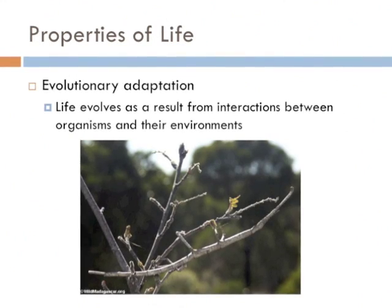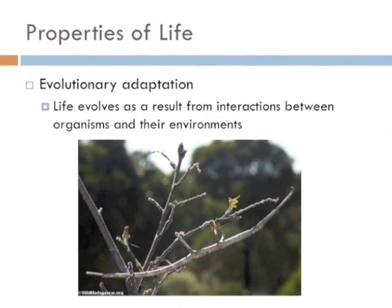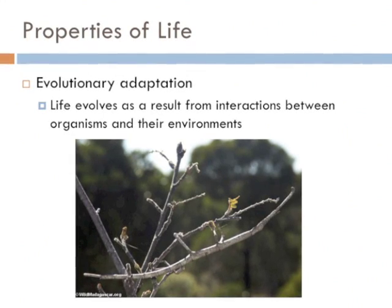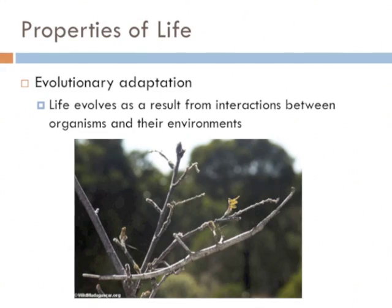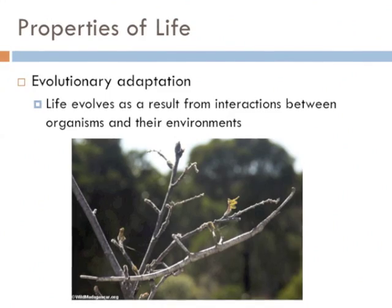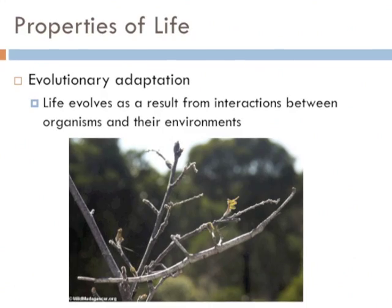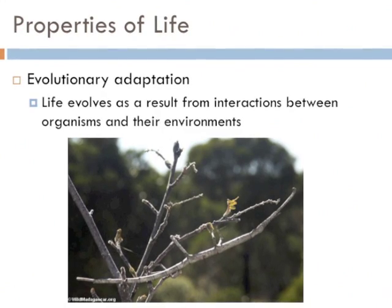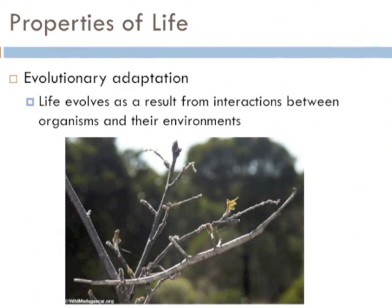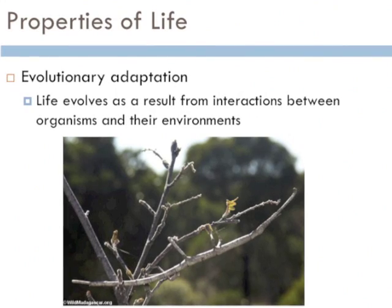Perhaps the final property of life is that it is evolutionarily adapted to its environment — life evolves as a result of interactions between organisms and their environment. In this picture, what do you see? You see a tree, a stick. There's actually a walking stick on there, which is an insect. The walking stick has evolved to mimic what a tree looks like in order to be protected from predators. This is an example of an organism being adapted to its environment.